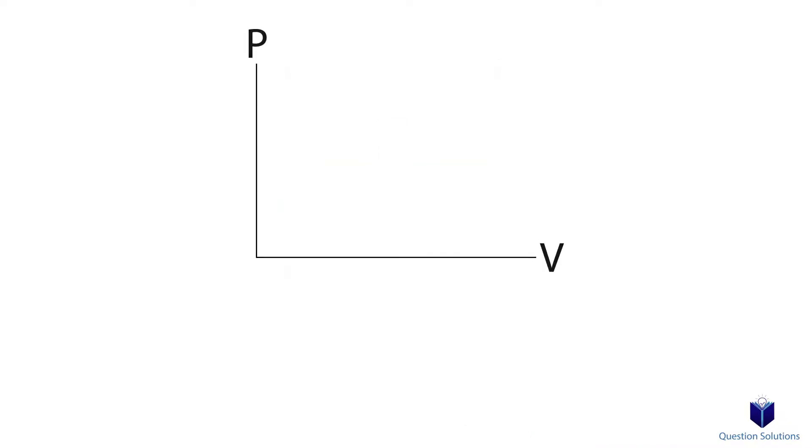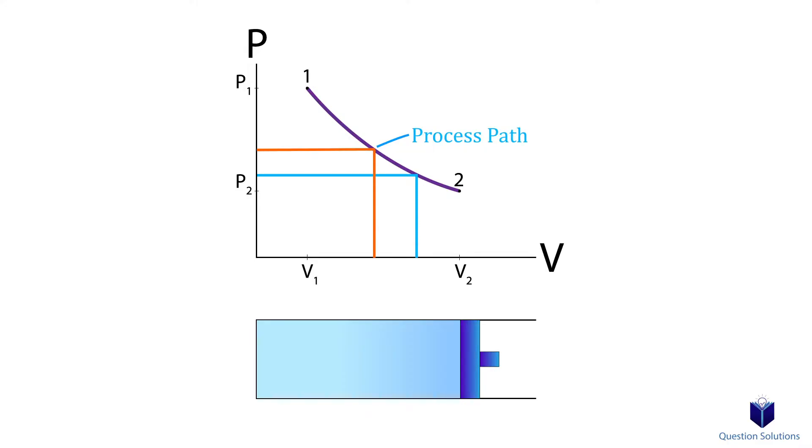To explain this better, let's draw a pressure versus volume graph. We will also show the piston like this. Now here is our initial point. So we have high pressure, but low volume. Now our piston moves like this and stops at the second stage. Now our volume increased and the pressure dropped. This line right here is called the process path. It tells us the pressure at any volume, and vice versa.